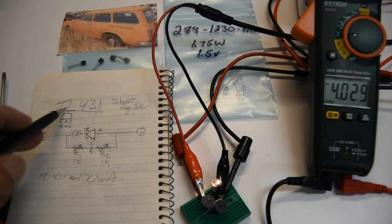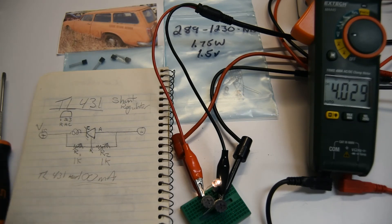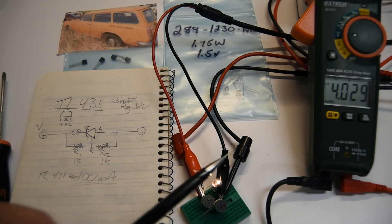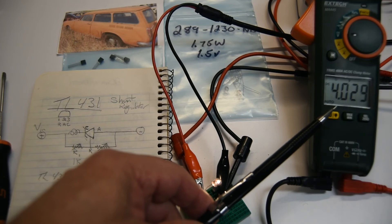My thought process is if a TL431 will limit my voltage on a per cell, and all I'm trying to do when I charge my batteries is to keep an individual battery from going above 4.2 volts. You can see the meter here is showing 4.029.